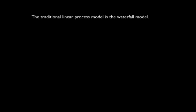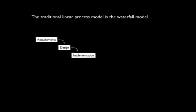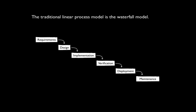The waterfall model was used pretty extensively through the 70s and early 80s. Basically, what you did was start with the requirements — go gather them, get the requirements defined. From the requirements, you would then produce a design of the system. Once you have the design in place, you would do the implementation, the actual coding. Once the system is coded, you would go through a verification stage where you ensure that the system you built does indeed meet the requirements. Once you're satisfied there, you would deploy it, put it into production. And once it goes into production, you enter the maintenance phase where you're dealing with bug fixes and things like that, just keeping the system up and running.